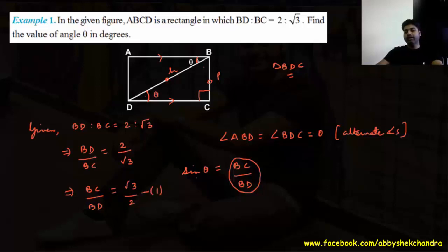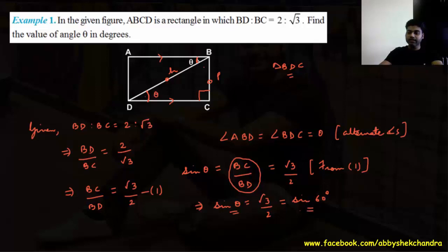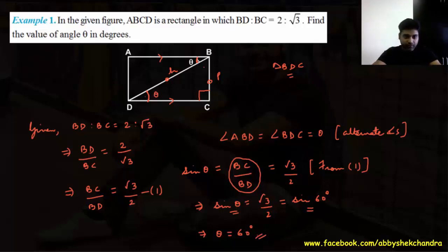So sin theta equals root 3 by 2. Root 3 by 2 is sin of 60 degrees, so sin theta equals sin 60 degrees, which means theta equals 60 degrees. That is our answer.